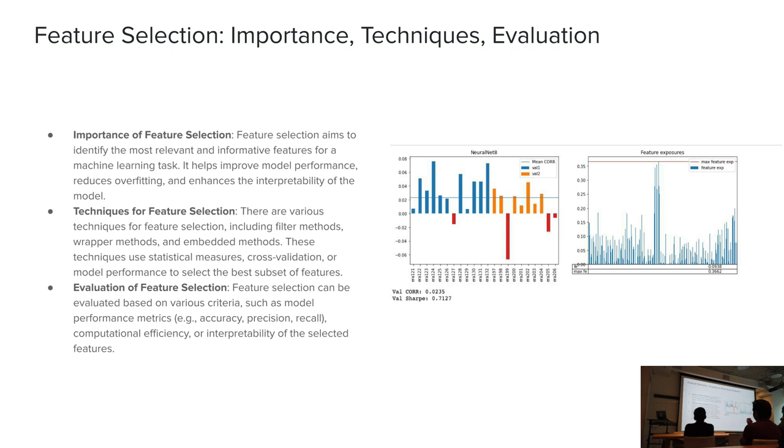There are a couple of different techniques for feature selection. Some are more simple, some are actually included in those algorithms, and then some you can actually add on top of what you're already working with to give you a little bit of an extra push in the right direction. There's different filter methods, wrapper methods, and embedded methods. Some are just using simple statistical measures of all the different features. They also have cross-validation or model performance that you can run with different parameters to figure out what the best subset of features will be before you actually run your predictions. Feature selection can be evaluated based on a lot of different criteria: model performance metrics, computational efficiency, blah blah blah. That's just something you're going to have to look into a bit.